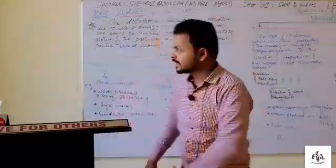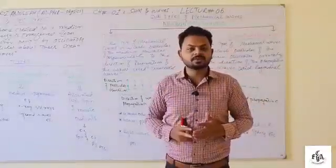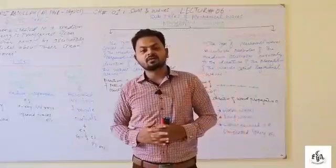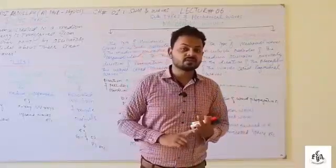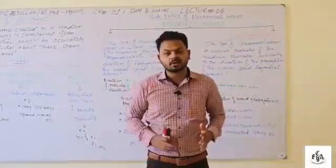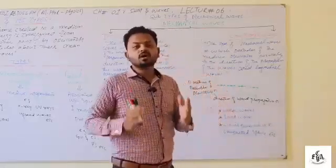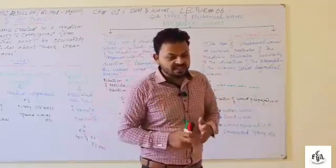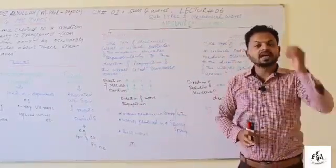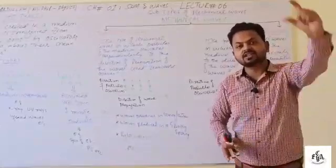We have discussed waves and its three types — mechanical, electromagnetic, and particle waves. Now we need to discuss the two subtypes of mechanical waves. The first is transverse waves and the second is longitudinal waves. In transverse waves, the particles of the medium oscillate perpendicularly to the direction of propagation of the waves.